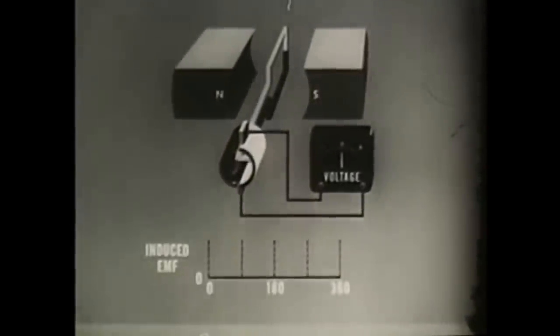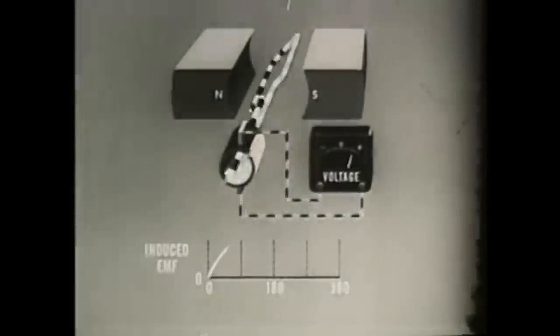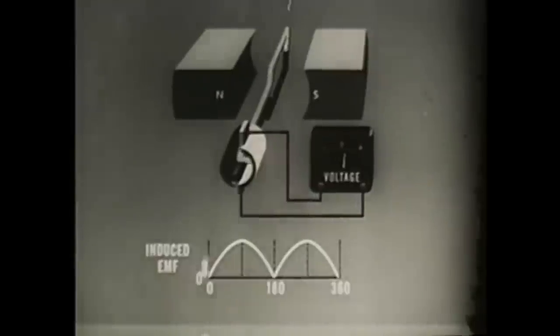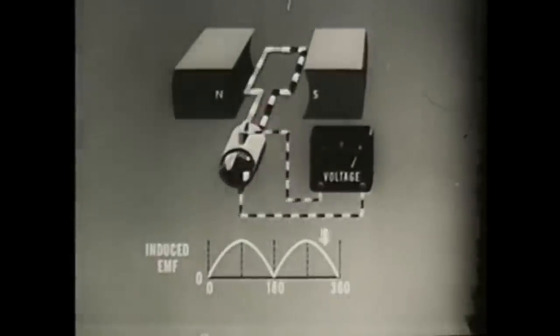Represented graphically, the output amplitude still varies. The DC is in the form of pulses. It is a pulsating direct current or PDC. The pulsation from zero to maximum twice for each revolution of the loop is called ripple.